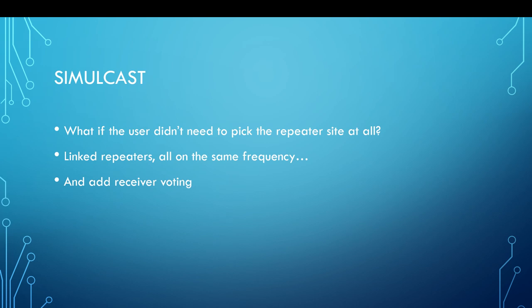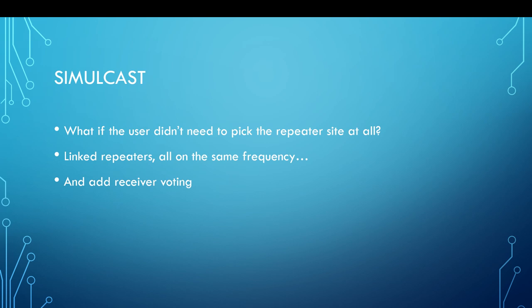What about a situation where the user did not have to pick which repeater site they use at all? A good example is visitors who might not live in the local area - they might just see one frequency in their listing. What if we had linked repeaters all on the same frequency? You wouldn't have to go through a big frequency list to find the right frequency and tones. What if we combined that with receiver voting? When we talk about simulcast, we're talking about overlapping coverage areas where we're transmitting the same information at the same time on the same frequency.